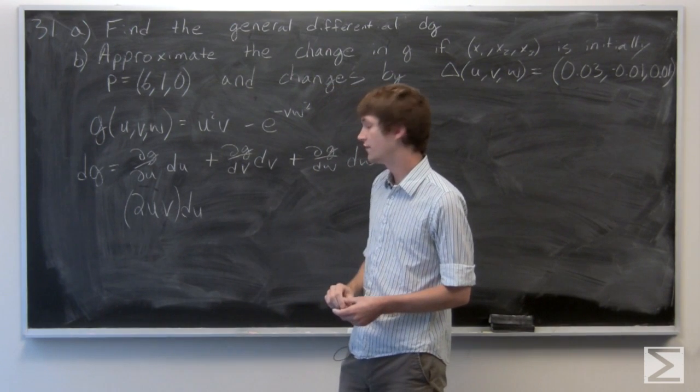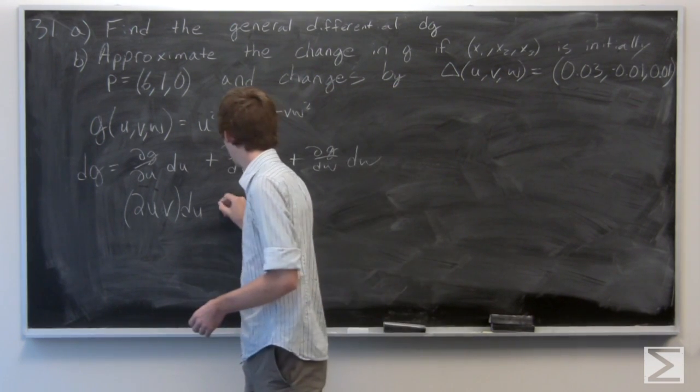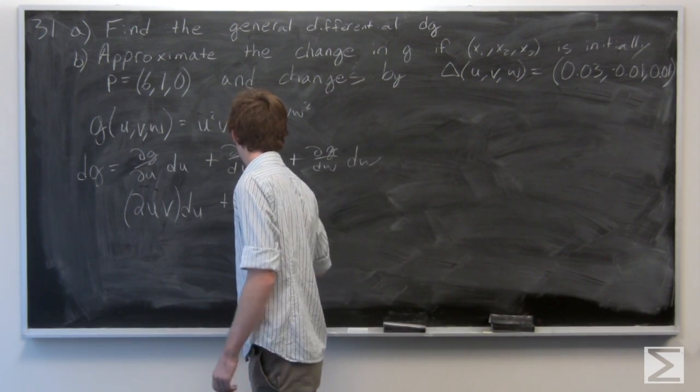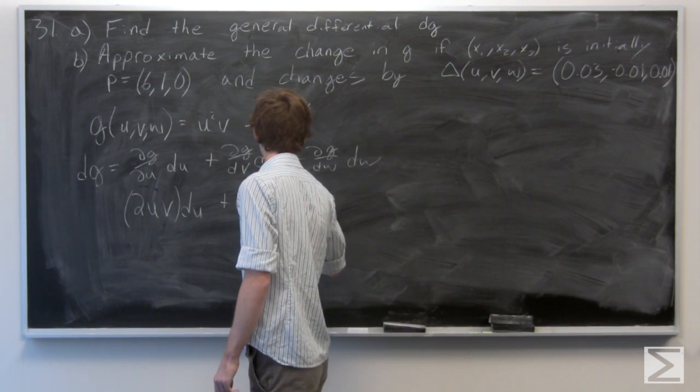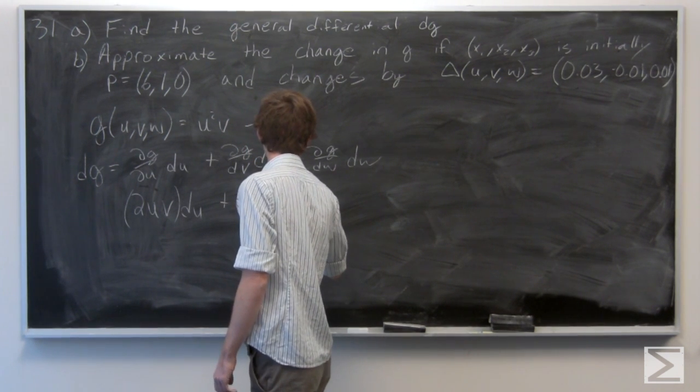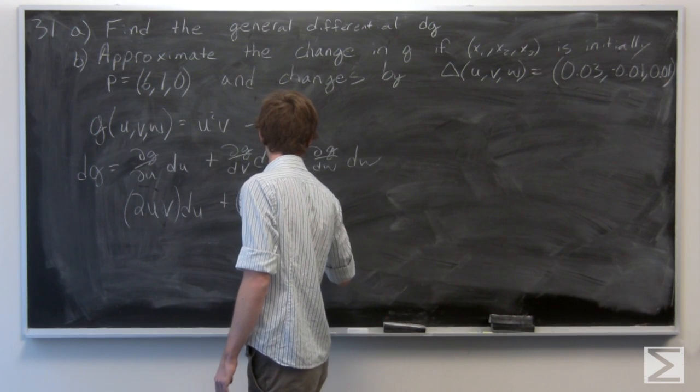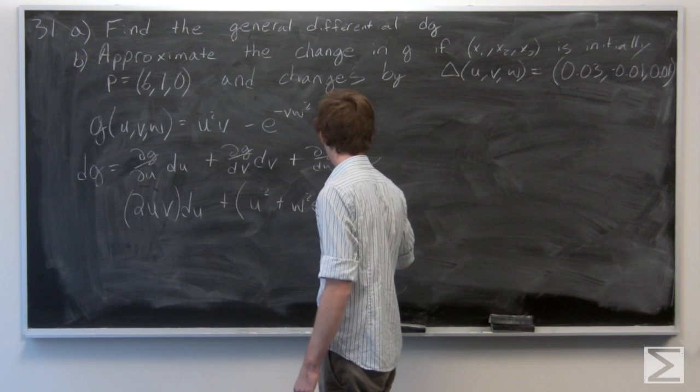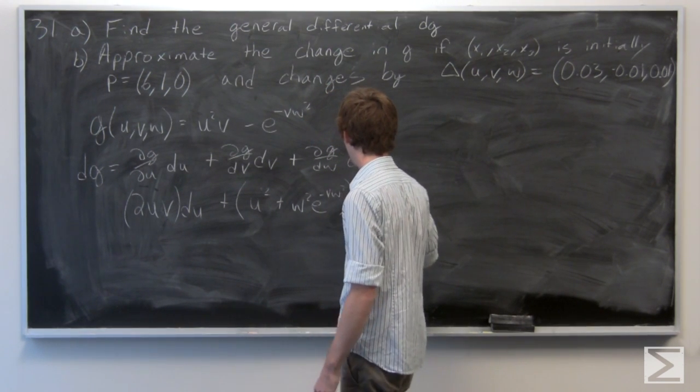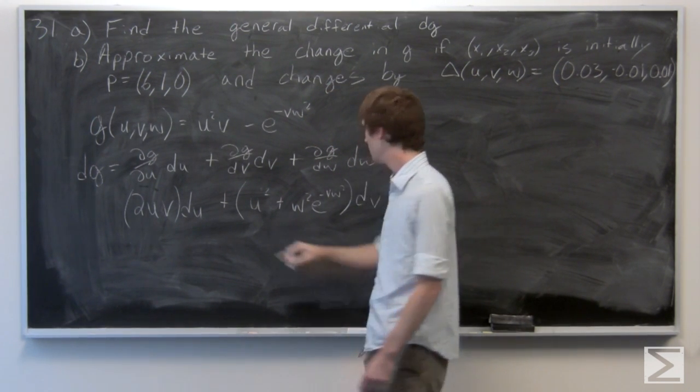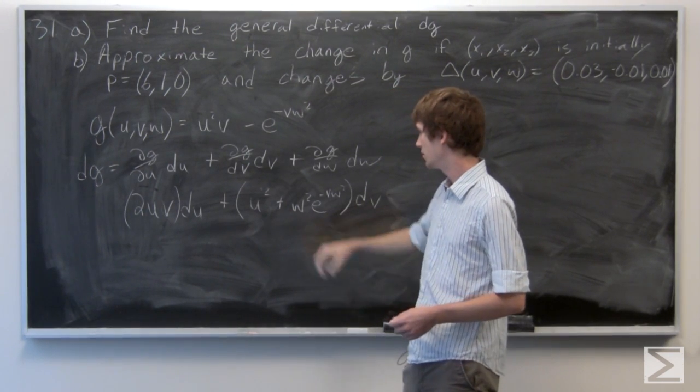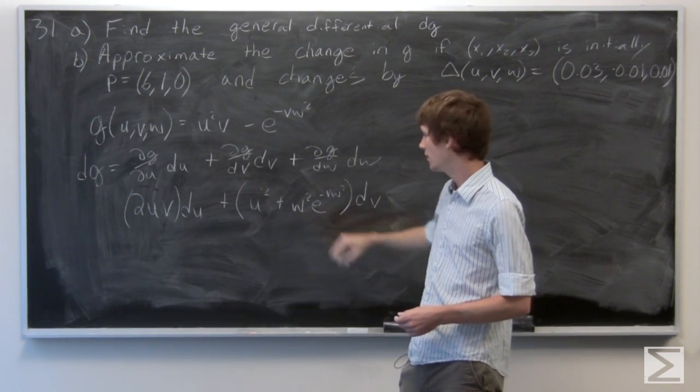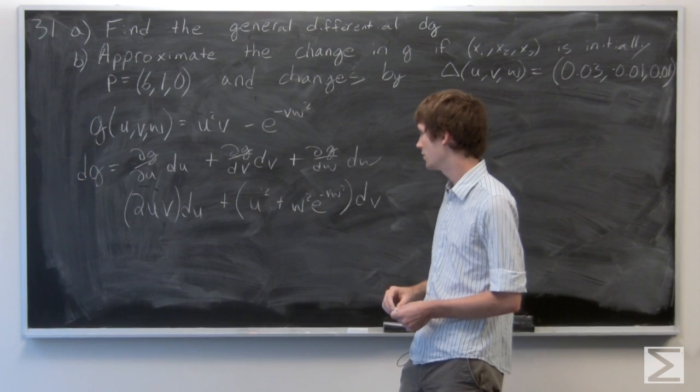The partial derivative with respect to v is u squared plus w squared e to the power of negative v w squared.